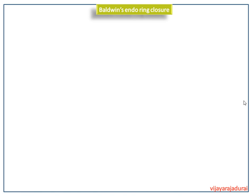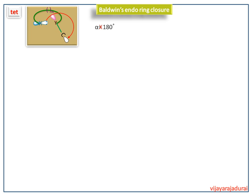Here we continue Baldwin's ring closure rule, focusing on the endo ring closure rule. First, we discuss the endo ring closure rule for the tet (tetrahedral) hybridized molecule. This is the general structure of the tet-hybridized molecule. Here the nucleophile cannot interact with the LUMO of the carbon to achieve advantageous overlap and subsequent bonding, since α is not equal to 180 degrees. So it is not a favorable reaction. All endo-tet cyclizations are unfavorable.